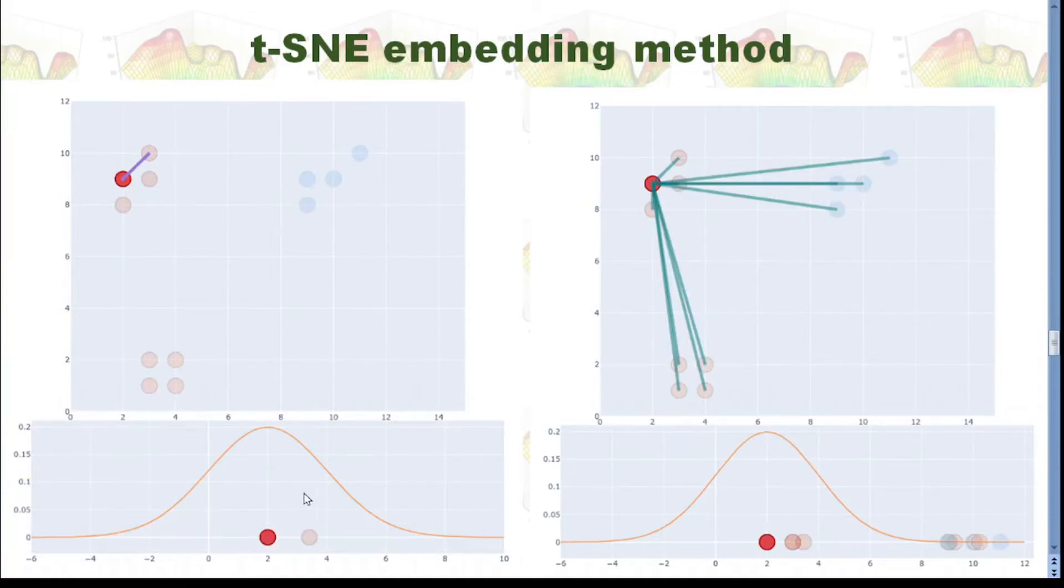At this time, we are going to use normal distribution. Because xi is this data point, it will sit in the middle of the distribution. And another data point will sit here. So, this is the graph I just showed you. And similarly, we are going to measure the distance between xi and all other data points. And then, you can draw the graph like this. Please remember, in this process, we are using normal distribution.